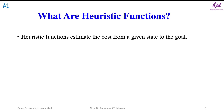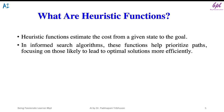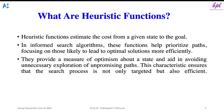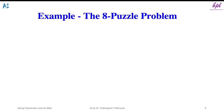Now let us see what are heuristic functions. Heuristic functions estimate the cost from a given state to the goal state in informed search algorithms. These functions help prioritize paths, focusing on those likely to lead to optimal solutions more efficiently. They provide a measure of optimism about a state and aid in avoiding unnecessary exploration of unpromising paths, ensuring that the search process is both targeted and efficient.